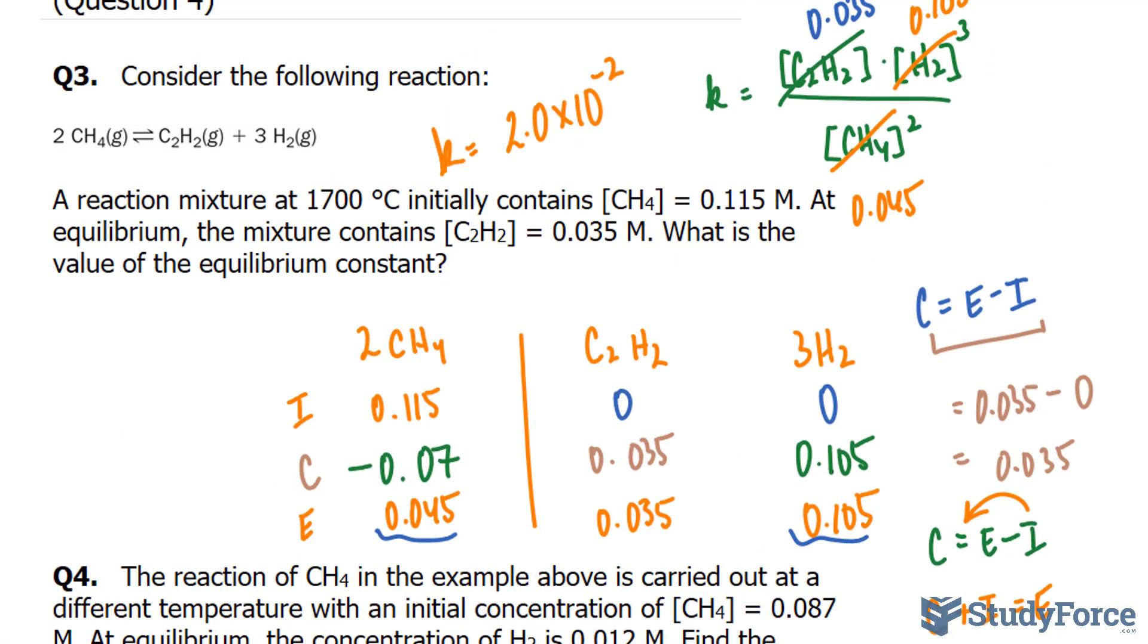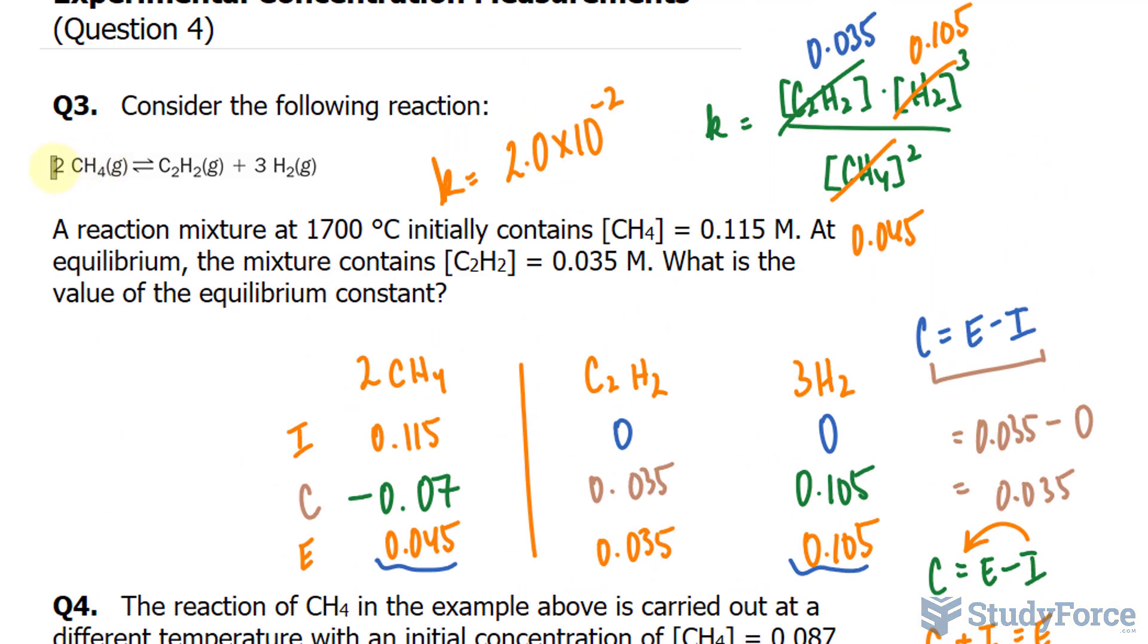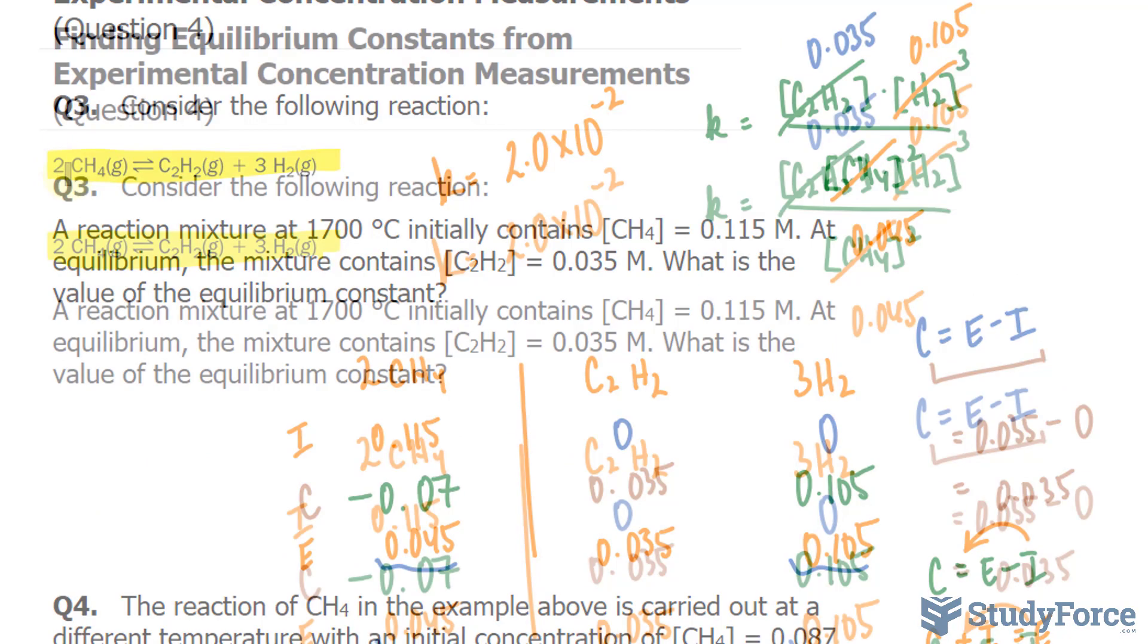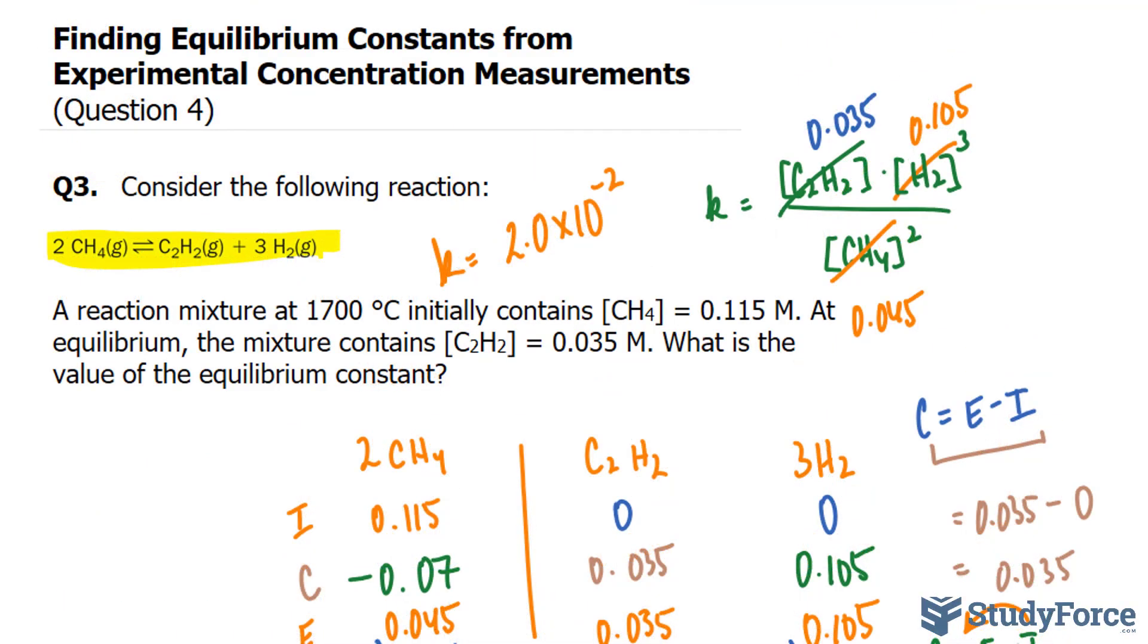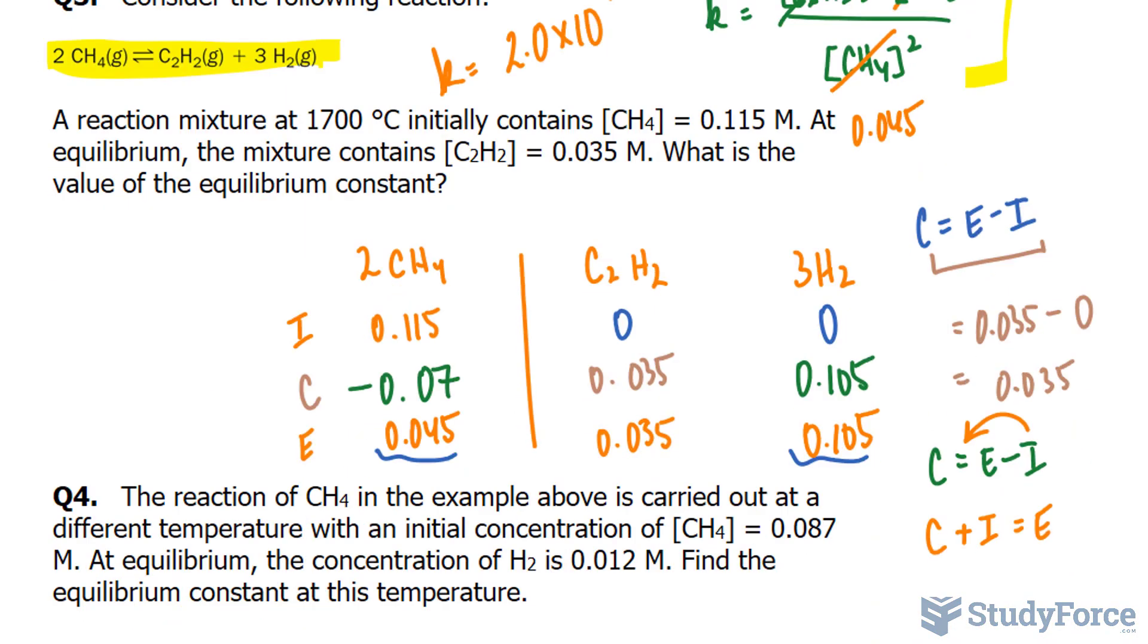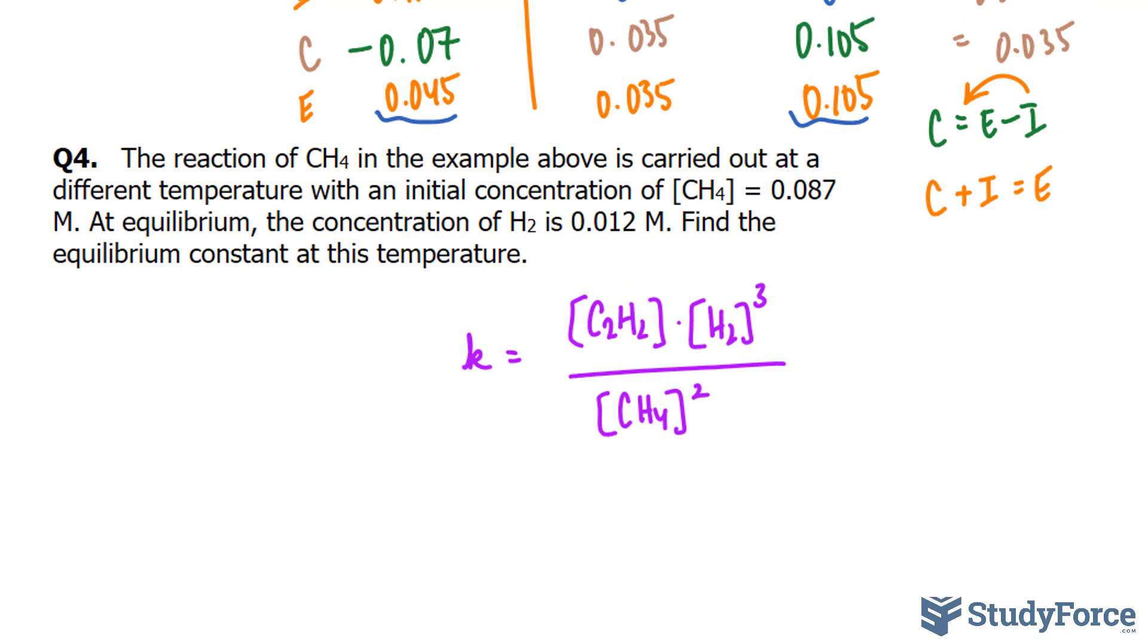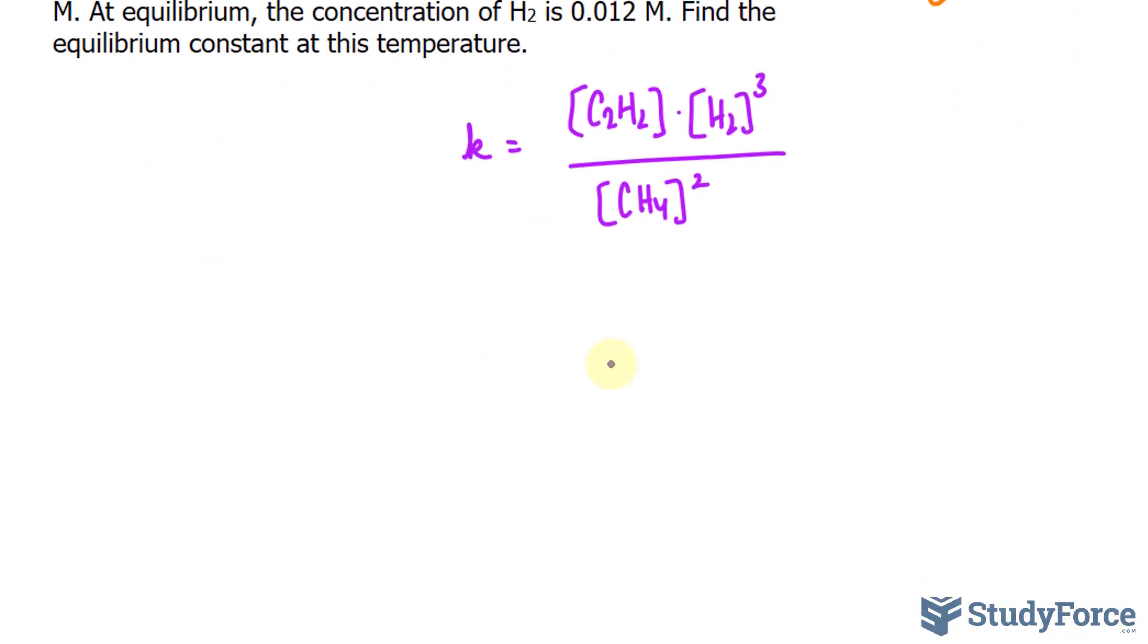Just recall the equation is shown right here and the equilibrium expression that we found in the previous question was shown here. So I'll rewrite that. Now that we've covered that, let's rewrite the chemical equation. We had 2CH4 yields C2H2 plus 3H2.